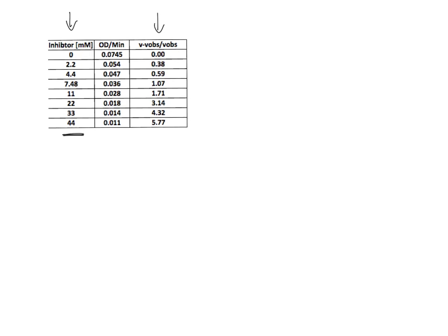What's really nice about this kind of plot is that you do all your rate measurements in the presence of a fixed substrate concentration — and you must use the same substrate concentration all the time. You have to determine your rate without an inhibitor because that goes into the calculation. The good thing is you do everything in the original units, OD per minute, without needing to convert to millimolar per minute.